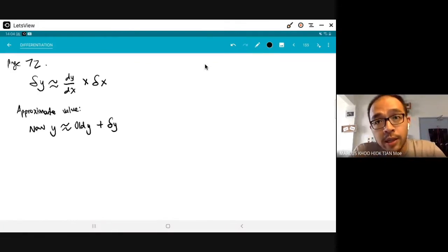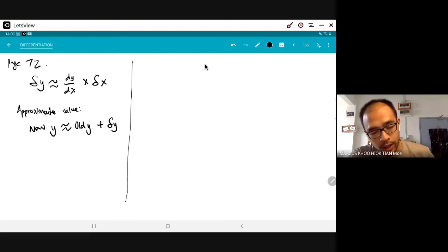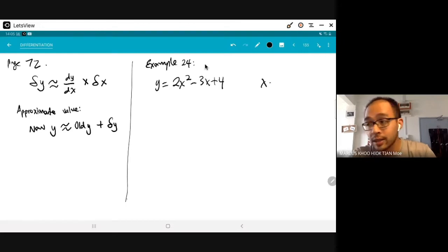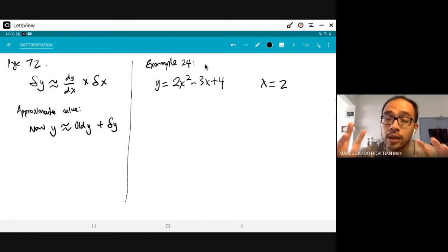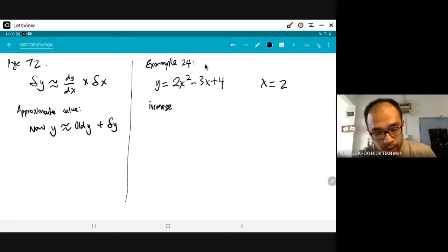So, there's another type of question that is commonly asked. If you turn to page 73, take a look at example 24. So in example 24, you are given the equation y equals to 2x squared minus 3x plus 4. Then you are given x equals to 2. Then there is a small change in x by 3%. So now they are giving to you the small change in terms of 3%, there is an increase in x.